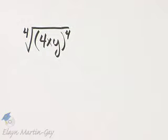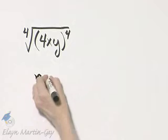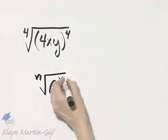Let's simplify this expression, and we need to insert absolute value bars when necessary. If you'll recall, if I have the nth root of a raised to the nth power,